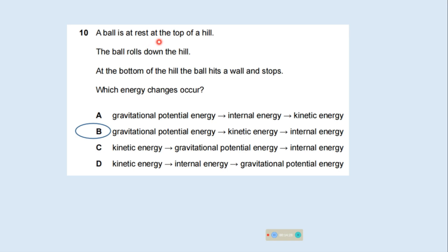A ball is at rest at the top of a hill. The ball rolls down the hill. At the bottom of the hill the ball hits a wall and stops. Which energy changes occur? This is a simple one. This is option B. Gravitational potential energy, because the ball is at rest, then kinetic energy, and then internal energy.